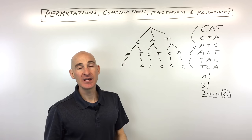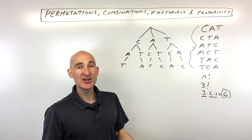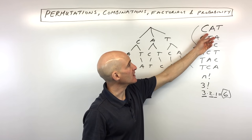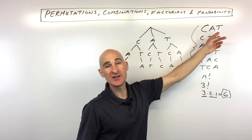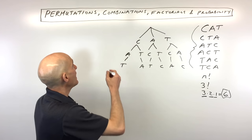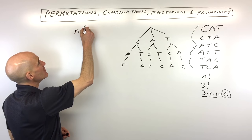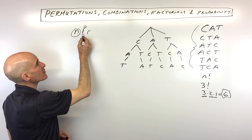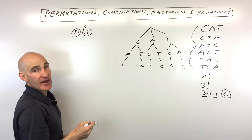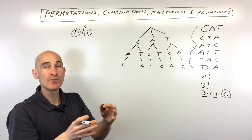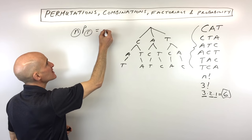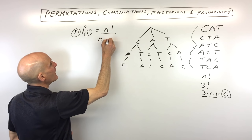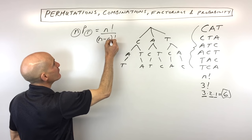What happens if you want to take permutations of N objects R at a time? For example, if you only wanted to make a two-letter word using three letters, that's where NPR comes in. NPR means out of N objects, how many ways are there to pick R of them where the order is important? The formula you'll want to memorize is N factorial over (N minus R) factorial.